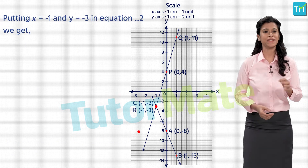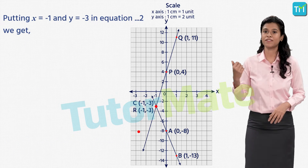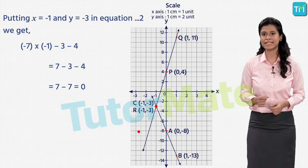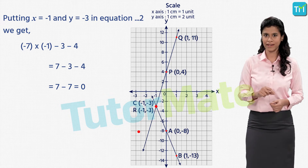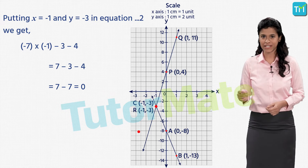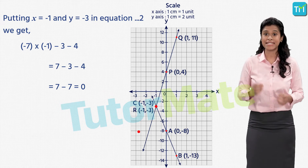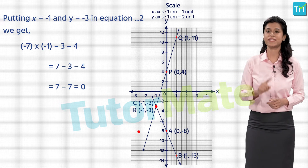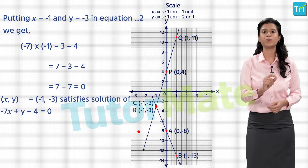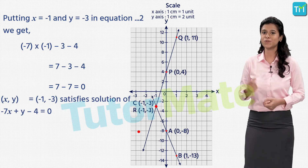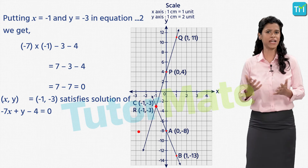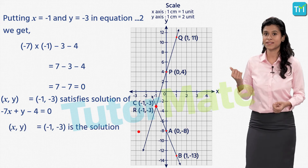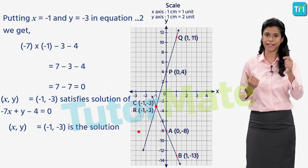Let us put these values in the second equation. Substituting x equal to minus 1 and y equal to minus 3, we get minus 7 into minus 1 plus minus 3 minus 4, which equals 7 minus 3 minus 4, equal to 0 — again equal to the RHS of the second equation. Therefore x equal to minus 1 and y equal to minus 3 also satisfies the second equation, and we can conclude this point gives us a common solution for both equations.